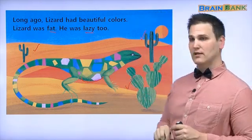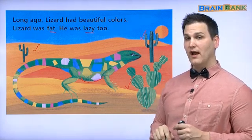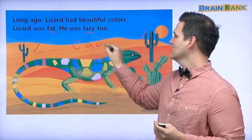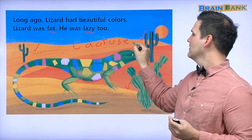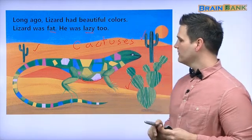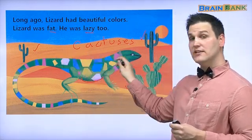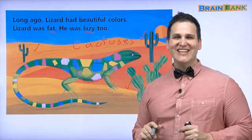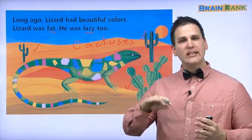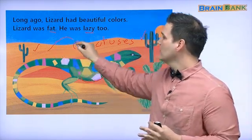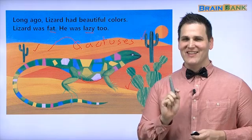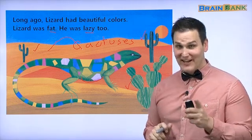Do you remember what these are? Check one, check two, check three — we have three kinds of cactus, and they look different from each other. And do you remember what this is called? A sand dune. A dune is a kind of hill.